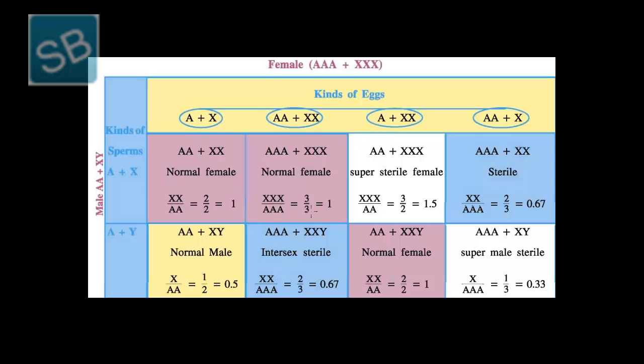Similarly, if the ratio in case of females is more than 1, that is for example 2 autosome plus triple X, then the female would be super sterile. Because here the number of X chromosome is more than that of the autosome. Similarly, if the number of X chromosome is less than that of the autosome in females, then the ratio would also be less than 1, and such a female would be sterile in nature.